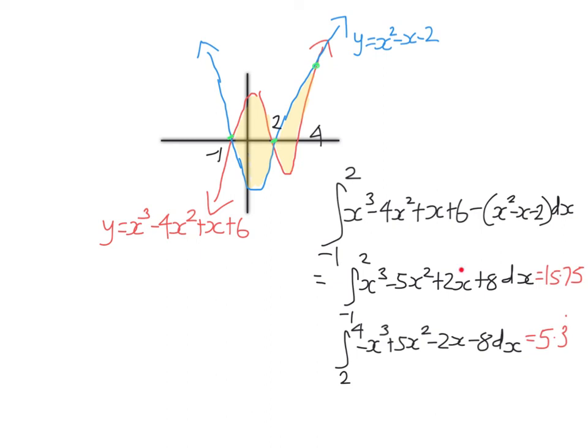So going ahead and evaluating this integral, I get 15.75 and this integral gives me 5.3 recurring. Make sure you know how to do that. Of course, we just integrate, increase the power by 1, divide by the new power. So it's x⁴/4 - 5x³/3 + x² + 8x evaluated between these two points.